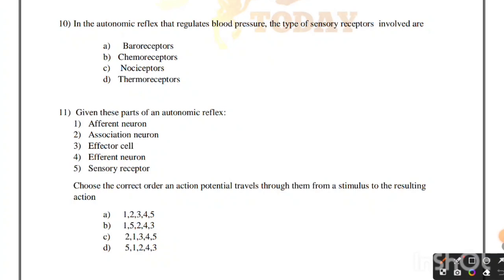In the autonomic reflex that regulates blood pressure, the type of sensory receptors involved are: baroreceptors, chemoreceptors, nociceptors, or thermoreceptors. Correct answer is option A, baroreceptors.